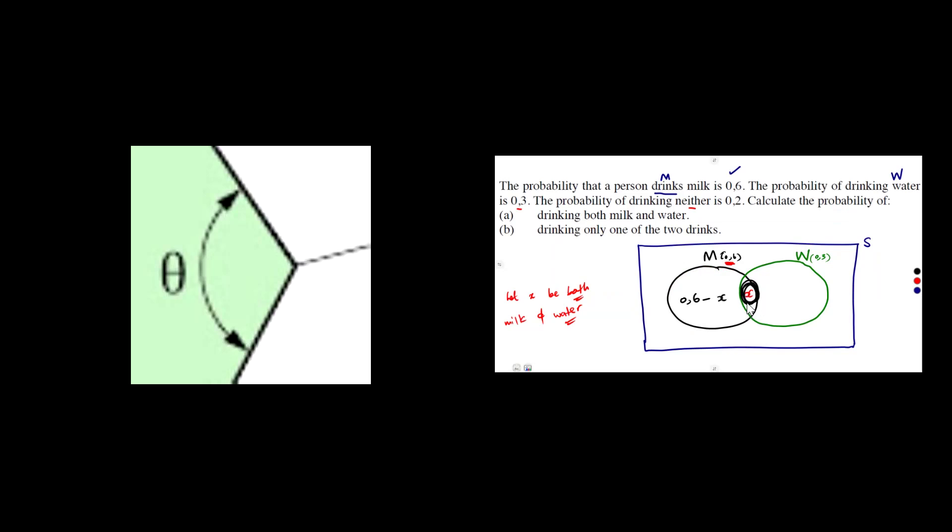Those ones that are found in both, they must be removed from those ones who are taking milk so that we obtain the milk only. The same thing with the water. We also need to know what about the condition of drinking water only? 0.3 minus X for both. What about this 0.2? The neither part. They have nothing to do with water and milk. It is outside, which is the 0.2. That's the neither part.